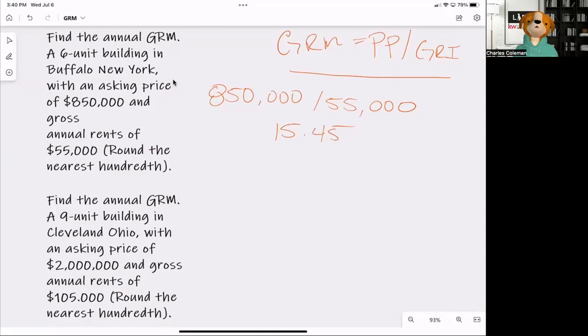As we look at the second question, we're going to do the exact same process. Find the GRM (gross rent multiplier): A nine-unit building in Cleveland, Ohio, with an asking price of $2,000,000 and gross annual rents of $105,000. Round to the nearest tenth.